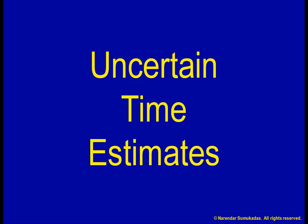In estimating the duration of the activities for my garden shed project, I assumed that all the durations were known with certainty. I calculated that the project would take 28 days. Given zero uncertainty, I could assume that there was a 100% chance of finishing on schedule. How realistic is that?